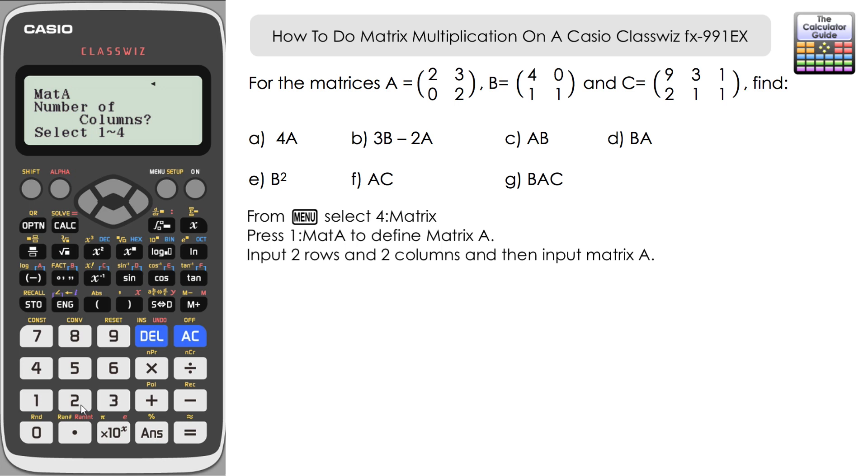And then you just need to input matrix A, 2, 3, 0, 2. Once you've inputted that, it's option, and we've got to continue defining the other matrices we have.